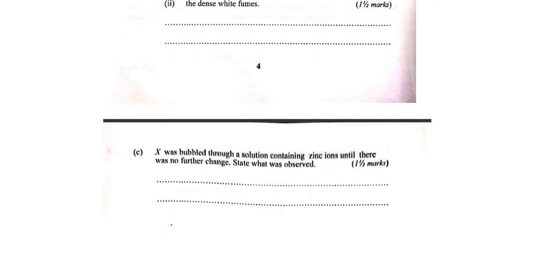Then lastly we have part C. It isn't clear but we shall persevere. Part C says X was bubbled through a solution containing zinc ions until there was no further change. This means our gas X was bubbled in excess over a long period of time into this solution. Remember, our X is ammonia gas. If we have zinc ions in solution and bubble ammonia, which is a very highly soluble gas, we shall have an ammonium solution, basically dissolving our ammonia in water.